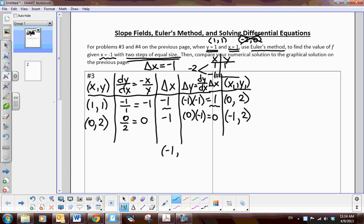That if I start at one, one, then my next point would be negative one, two. Now what I want you to do is go back and look at the slope field and look at the function that you drew on number three. So number three, kind of a rough sketch of number three is you had these slopes and you had these slopes.